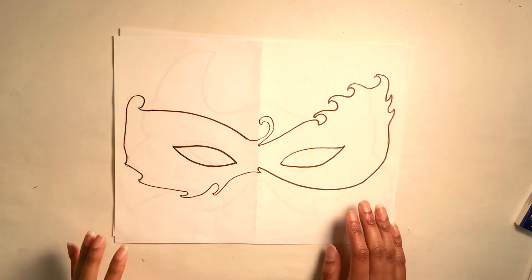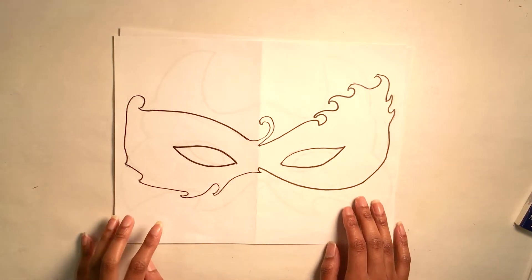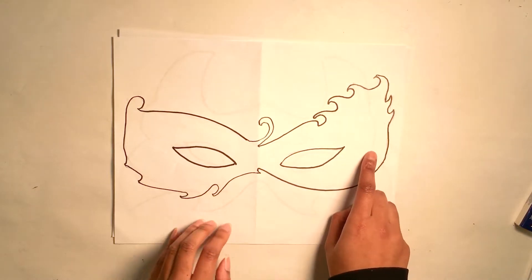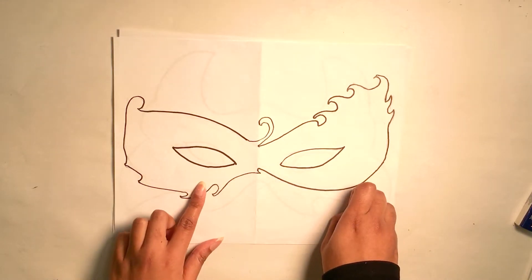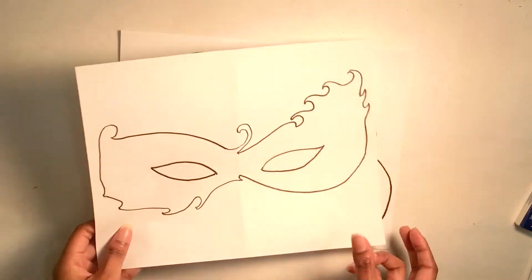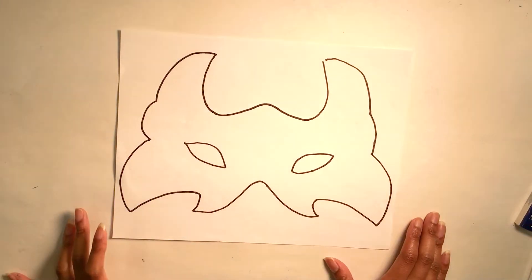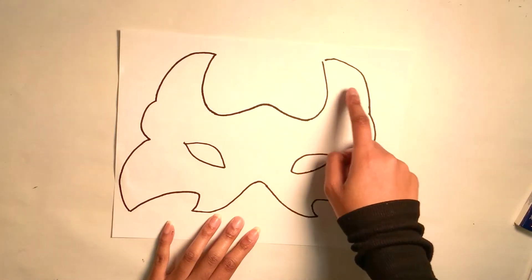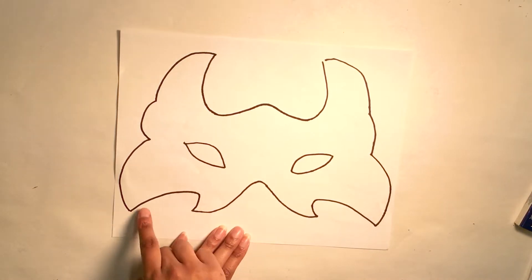Now this one is more experimental. We have swirls going off on one side and then swirls going down on the other side and then one single swirl in the middle. Our last mask is this animal wolf mask. You can tell because of the pointy ears and then the jagged edges.